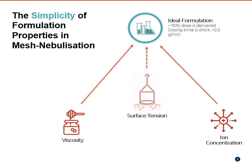Increasing viscosity decreases output rate; a presence of ions greatly improves output rate; and surface tension does have some effect, although currently it's not quantifiable. Due to the complexity of fluid systems and the difficulty of independently altering one property whilst holding the others constant, the interactions between these fluid properties have not been comprehensively assessed.